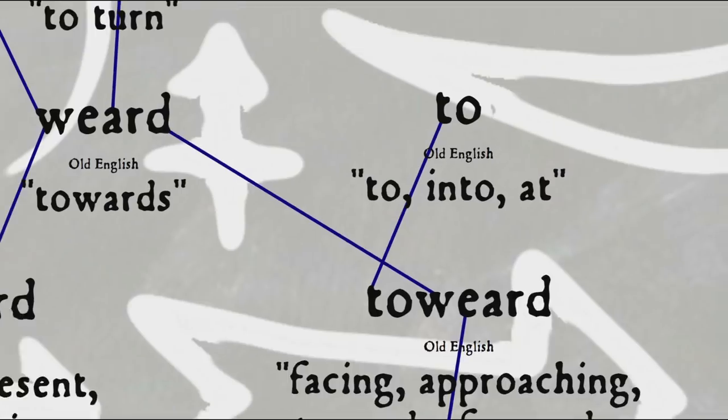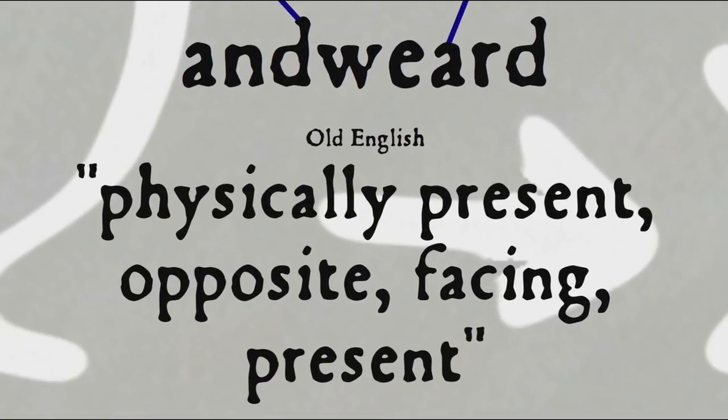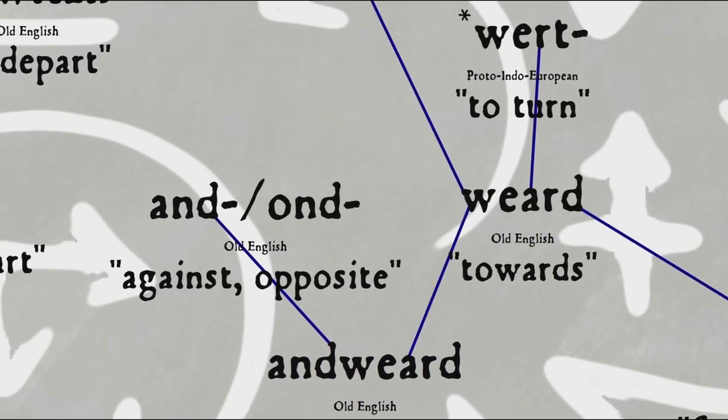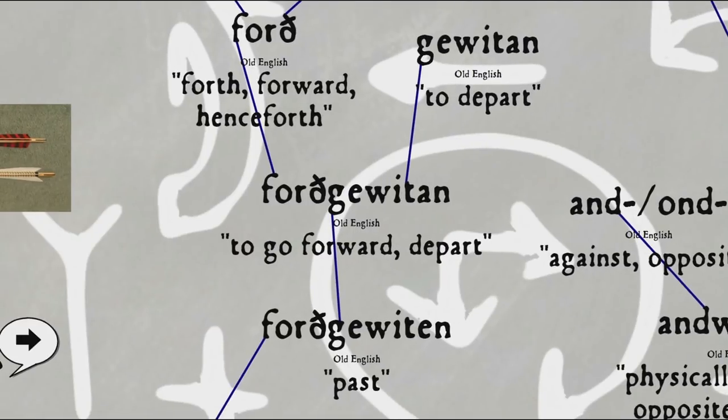The word andwærd means physically present, or opposite facing, and in reference to time means the present. Literally, it breaks down to the elements and or ond meaning against, opposite, and that same wærd meaning turned. And finally, forthewitten is the past participle of the verb forthewitten, to go forward or depart, with youwitten on its own meaning depart. That prefix forth means basically what you would expect from modern English, forth or forward.